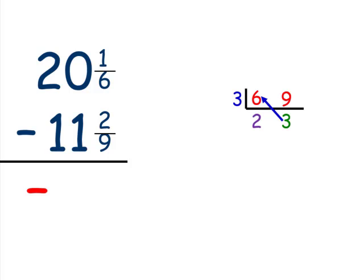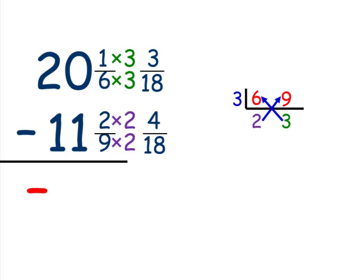So I'm going to multiply the fraction with the denominator 6 top and bottom by 3. And 2 gets multiplied by 9. So we're going to multiply the top and bottom of 2 ninths by 2. This will leave us with 3 18ths and 4 18ths.